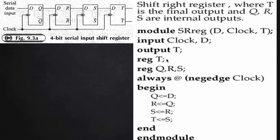In the always block, during the negative edge of each clock, a set of actions takes place. The input d is assigned to q, the current value of q is assigned to r, the current value of r is assigned to s, and s is assigned to t — using the non-blocking assignment operator.